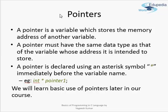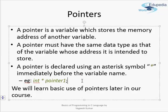A pointer must have the same data type as that of the variable whose address it is intended to take. If you want to store the address of an integer variable inside a pointer, you should also declare the data type of that pointer to be integer. If you want to store the address of a character variable, then the pointer's data type should also be character type. To declare a pointer, it is declared like a normal variable: the data type is followed by an asterisk and then the name of the pointer. This asterisk symbol is known as the dereference operator in C language.